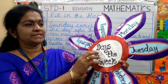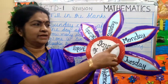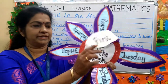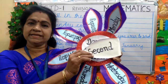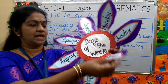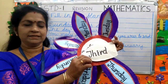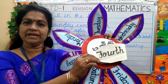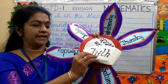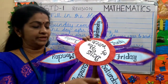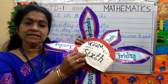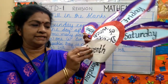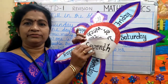Now, which day is the first day of the week? Monday is the first day of the week. Tuesday is the second day of the week. And Wednesday, the third day of the week. Thursday, fourth day of the week. And Friday, fifth day of the week. Saturday, sixth day of the week. Sunday is the seventh day of the week.